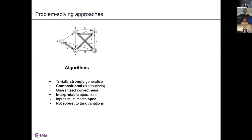Classical algorithms have downsides too. First, we have to write them ourselves. Second, we often need to make very precise assumptions about the format of input data — for example, a graph algorithm might need all edge weights to be positive or have no negative cycles. If that isn't true, it fails entirely. Also, the task might be slightly different than assumed — like in Google Maps, where the shortest path may not be the path users actually want, especially if traffic is involved.